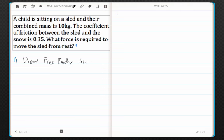So in this situation we have a child and a sled, and they are going to be pulled by someone else. So that's my child on a sled. The mass of the child and the sled is 10 kg, so let's draw that in there. Let's draw the free body diagram.